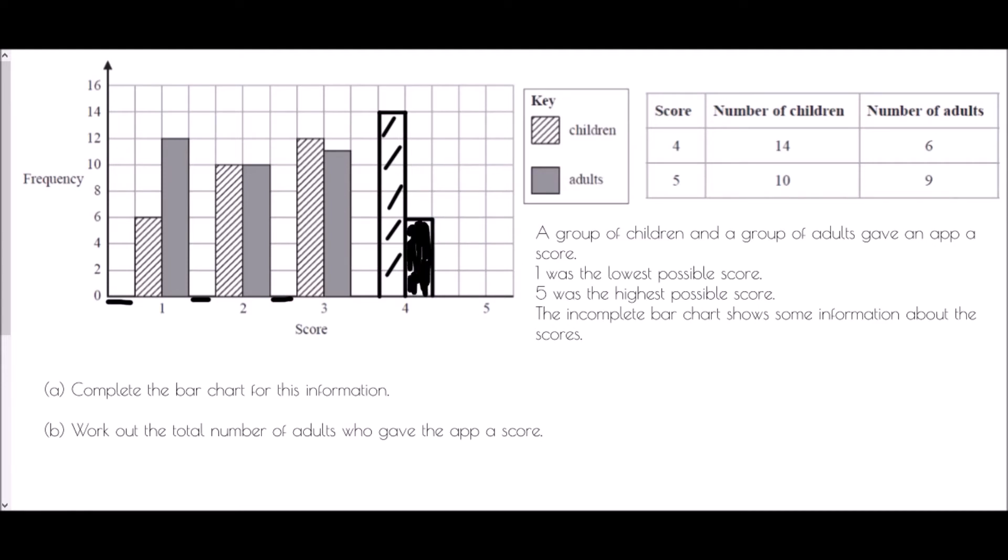Then for a score of five we are told that 10 children gave it a score of five we need to leave a gap again and we need to draw a line up to a height of 10. And again cross hatch just to show that that is the children and then the number of adults was nine. Now in this case we've got to be very careful because the squares that we've been using to show two at a time and so nine is actually halfway between the line for eight and the line for ten and so we're going to have to draw a little line going across that's halfway between the square. Draw it down and because that is adults colour it in in full.